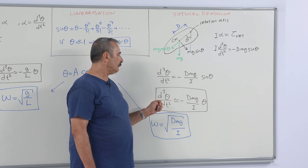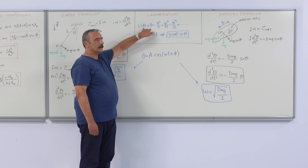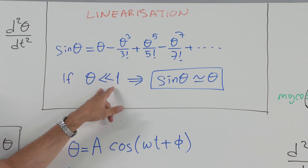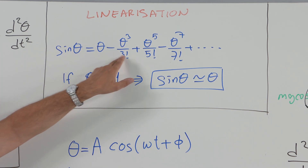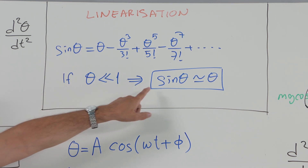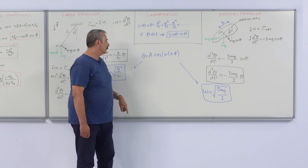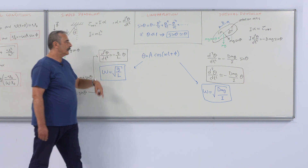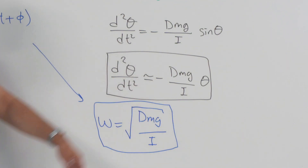We apply the Taylor expansion of sine theta for small angles. When theta is much smaller than unity in radians, we may neglect the higher-order terms in the expansion and approximate sine theta as theta. Then we will have linear equations for both the simple and physical pendulum.